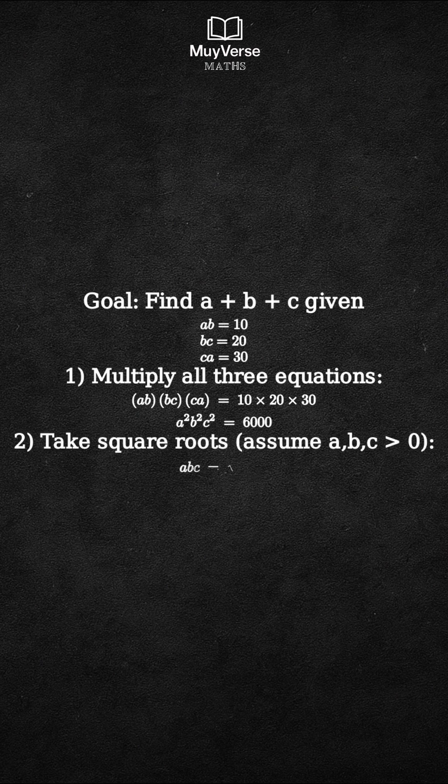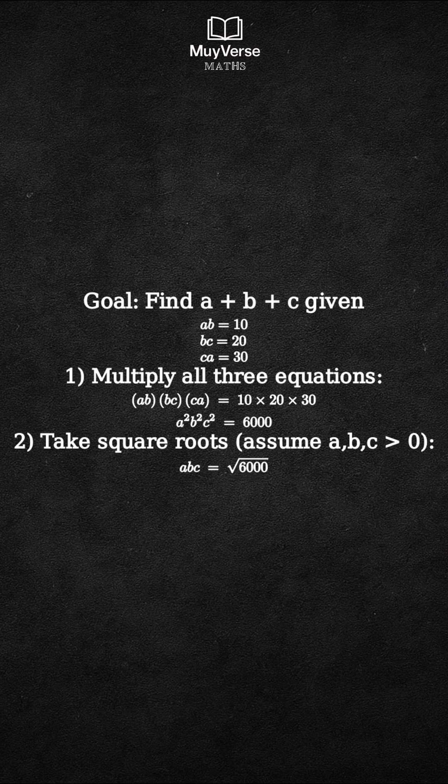Step 2. Solve for abc by taking the square root of both sides. We will assume a, b, and c are positive real numbers, so we take the positive square root. Then abc equals the square root of 6,000.